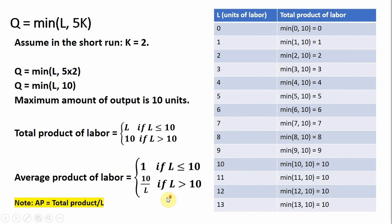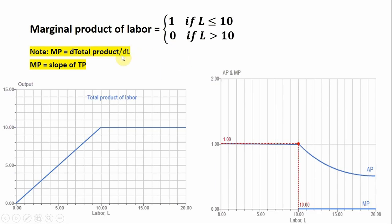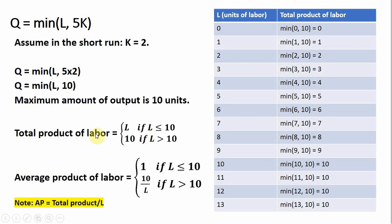Moving on to marginal product: marginal product of labor is just the derivative of total product with respect to labor. Our marginal product of labor will equal 1 if L is less than or equal to 10, and it'll be 0 if L is greater than 10. Taking the derivative of L we get 1, and taking the derivative of 10, a constant, we get 0.